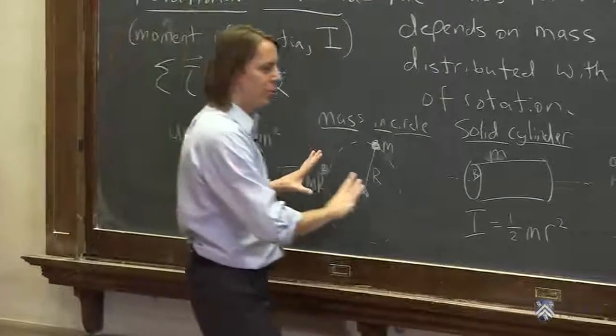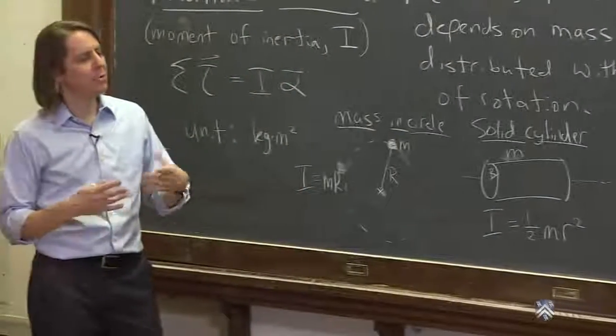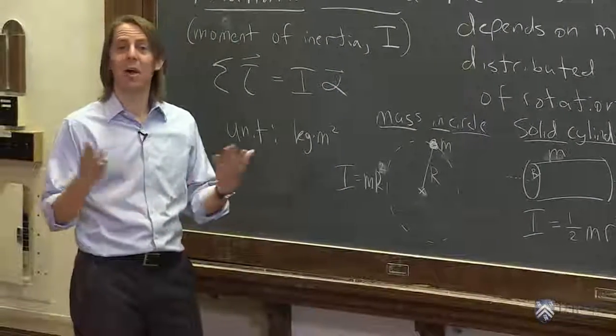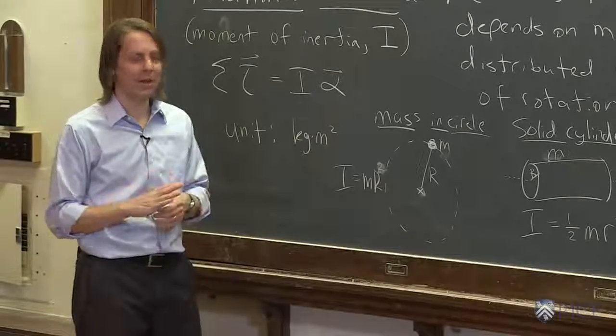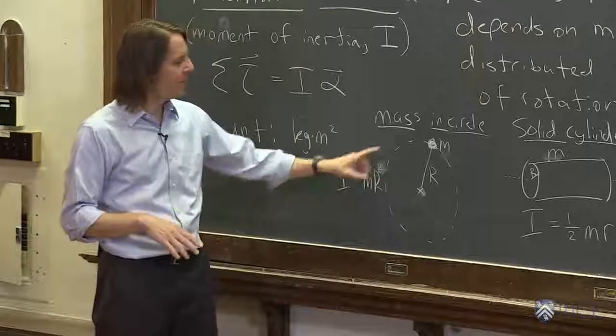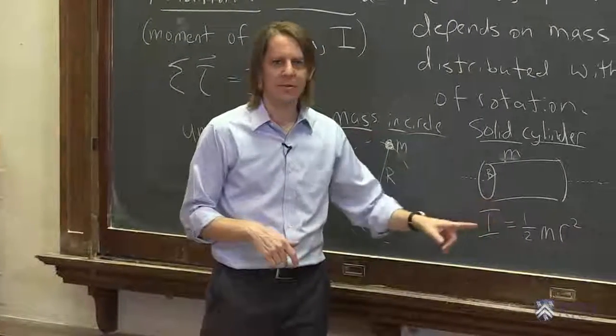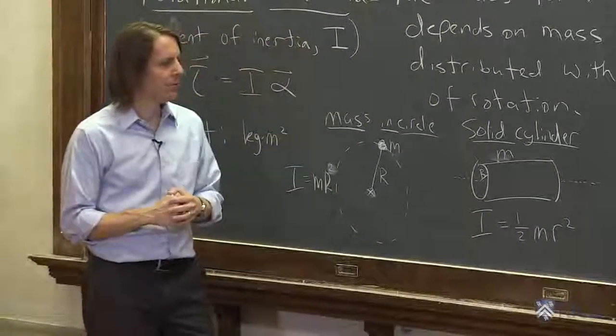So we aren't in this class going to derive these. We're just going to show them to you. And whether or not you need to memorize them depends on your class and what kind of a test you're taking. Usually this one, m r squared, for a point mass moving around, and this one for a cylinder, is usually enough. And you can get most problems done with those too.